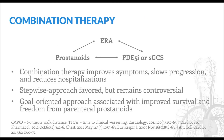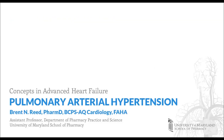An area of ongoing research is whether patients with PAH should have therapies added in a stepwise fashion as the disease progresses, or whether initial combination therapy should be considered, as is done in patients with heart failure. Combination therapy has been shown to improve clinical outcomes in retrospective studies, but data from randomized controlled trials are conflicting. Regardless of which strategy is selected, a goal-oriented approach appears to confer the greatest clinical benefit. Only the combination of PDE5 inhibitors and riociguat should be avoided; otherwise, any of the combinations shown here represent an acceptable regimen. That concludes today's presentation on pulmonary arterial hypertension. Thank you for your attention.